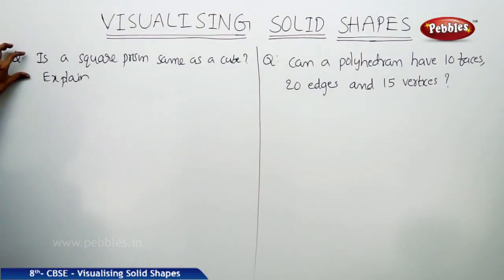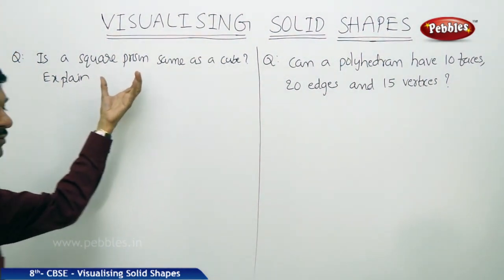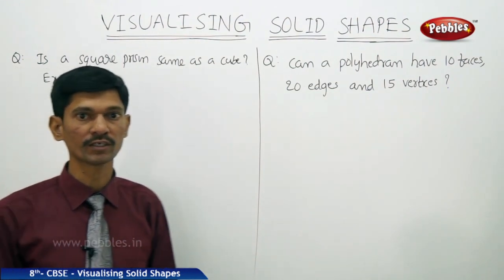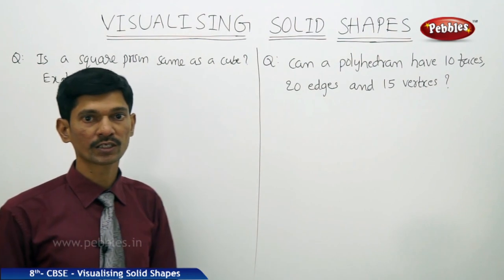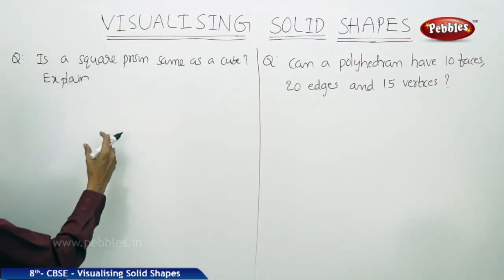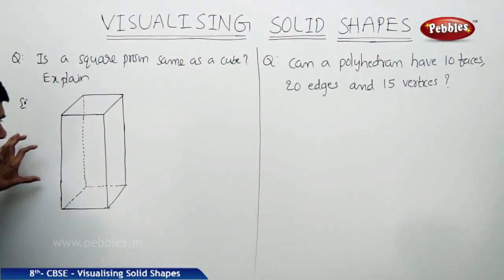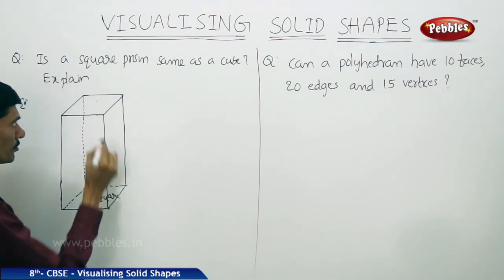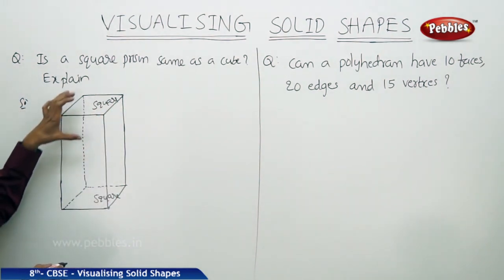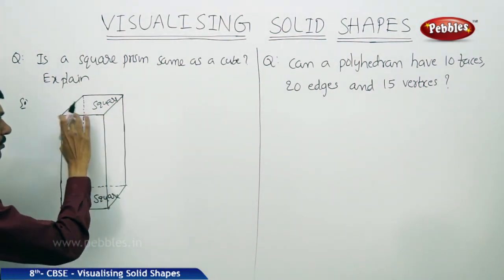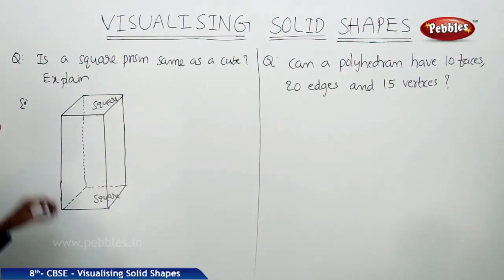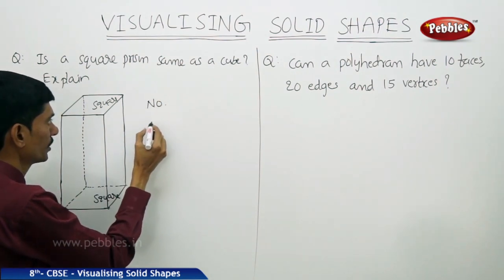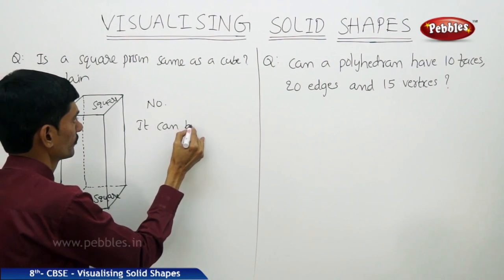Is a square prism the same as a cube? A prism is named according to the shape of its base. If the base is square, it is a square prism, but it may be a cuboid — not necessarily a cube — because the length and width may not be equal. So no, a square prism can be a cuboid but not compulsorily a cube.